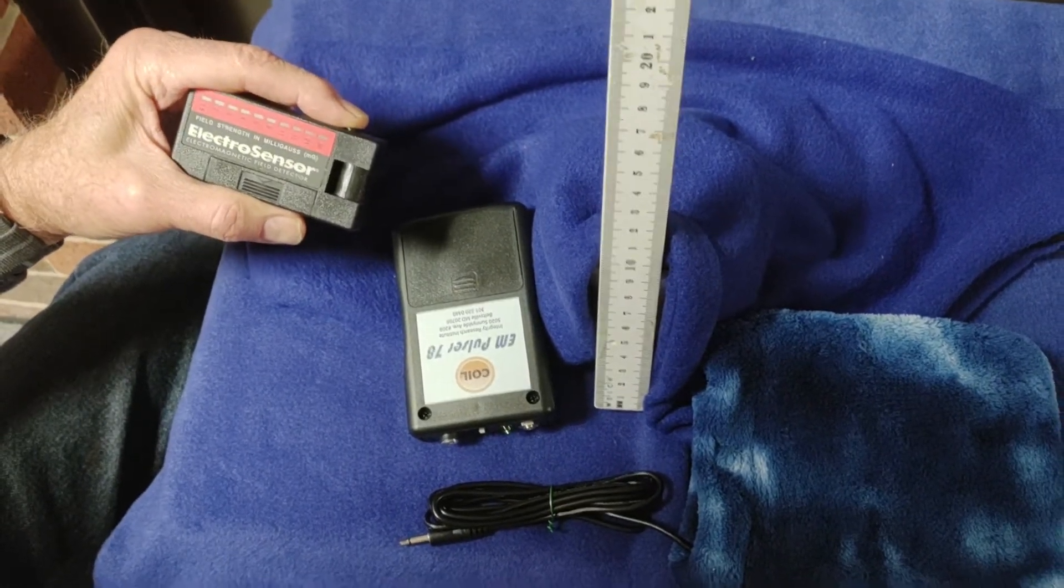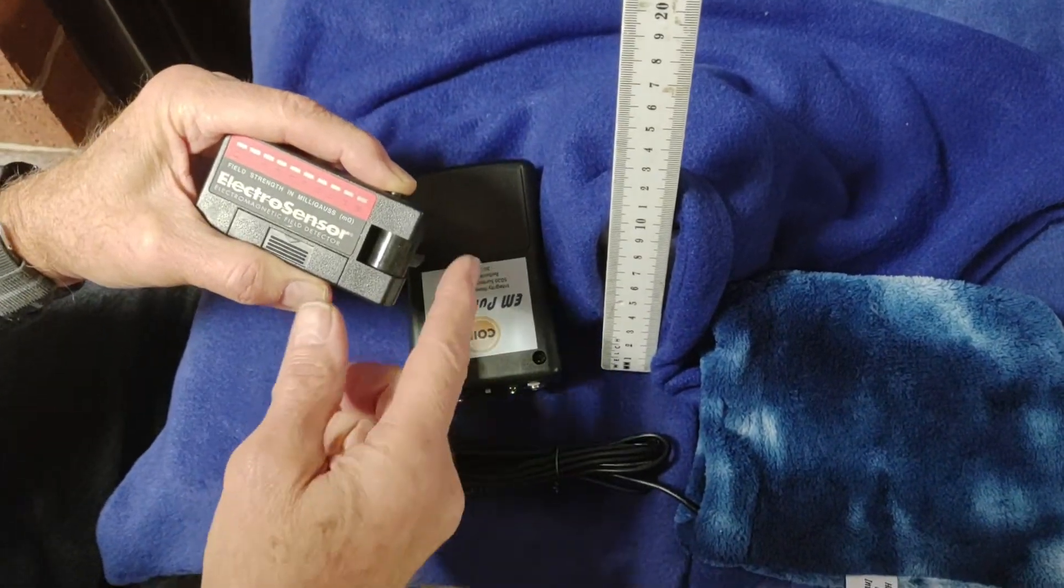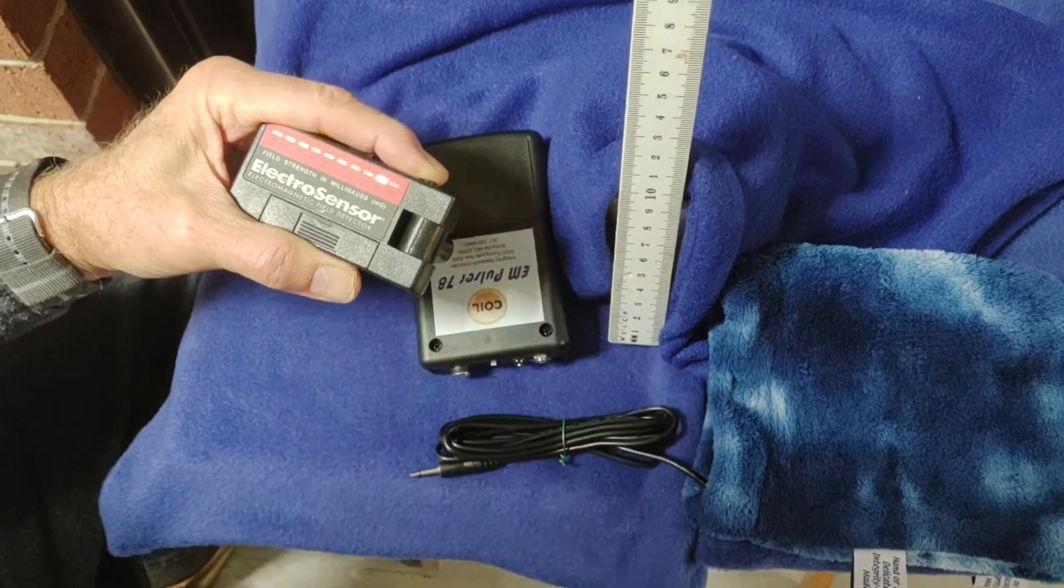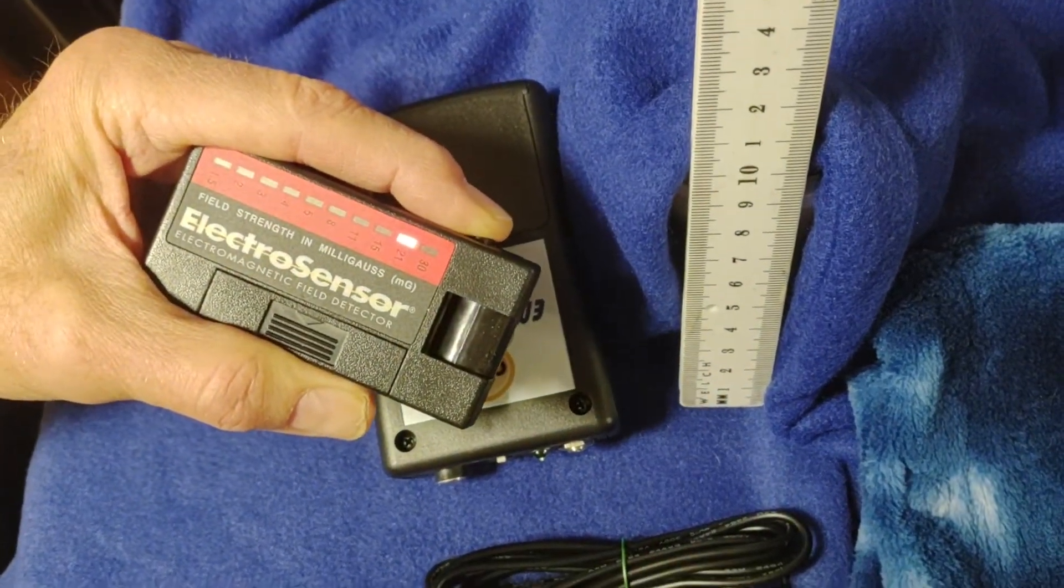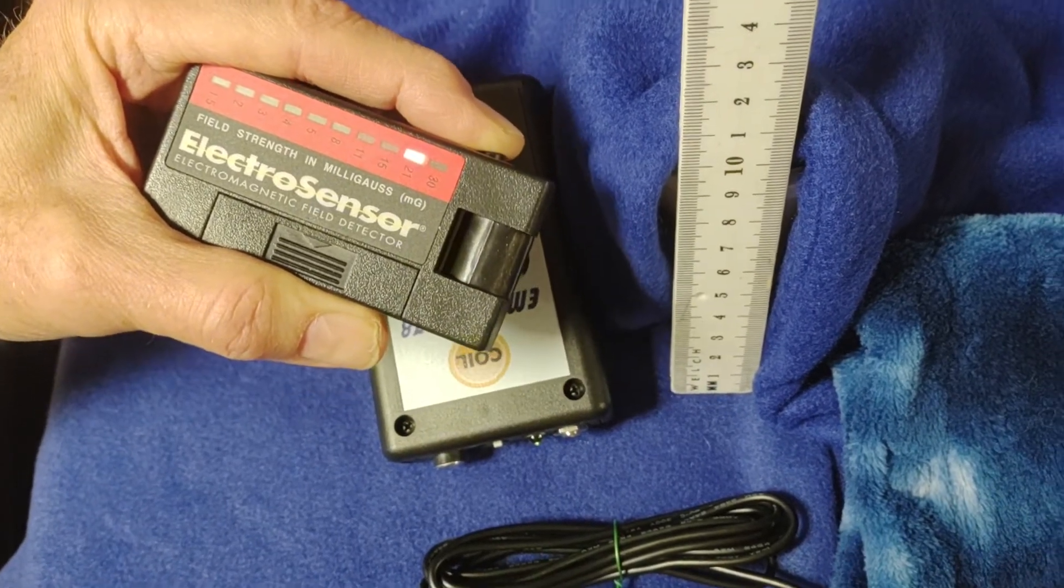I'm turning on the Gauss meter, which is our electrosensor, and we're basically looking for the output from the coil directly where the treatment area would be. And this is a ruler in centimeters.